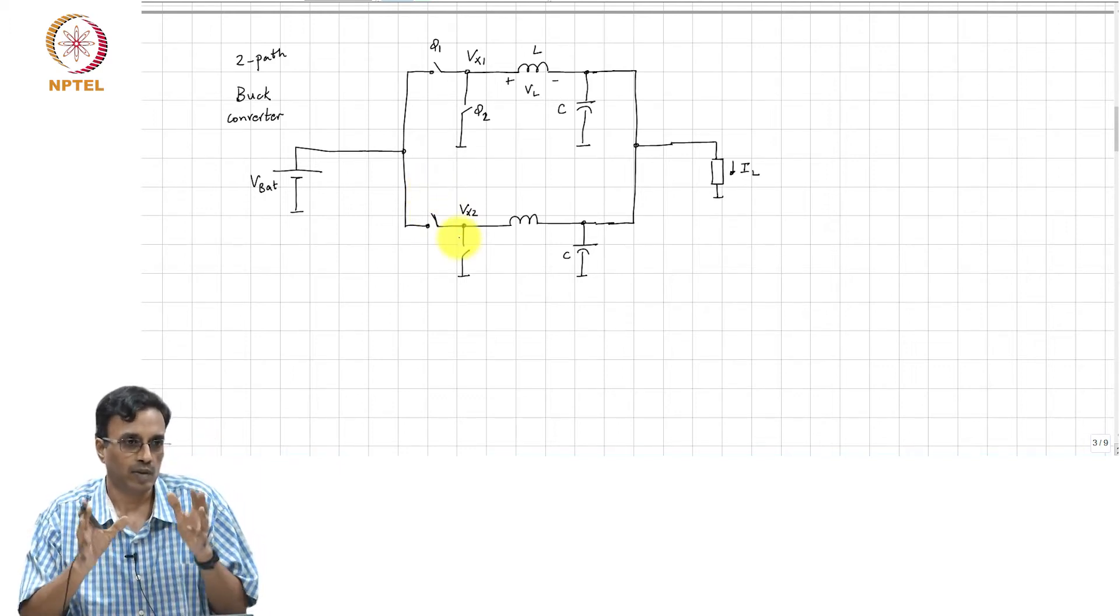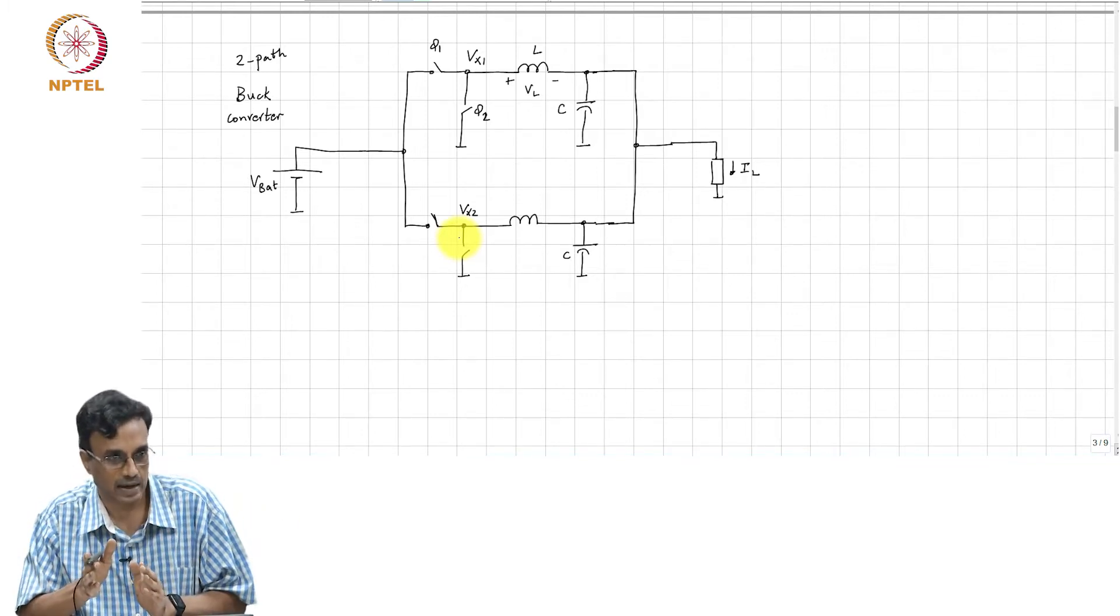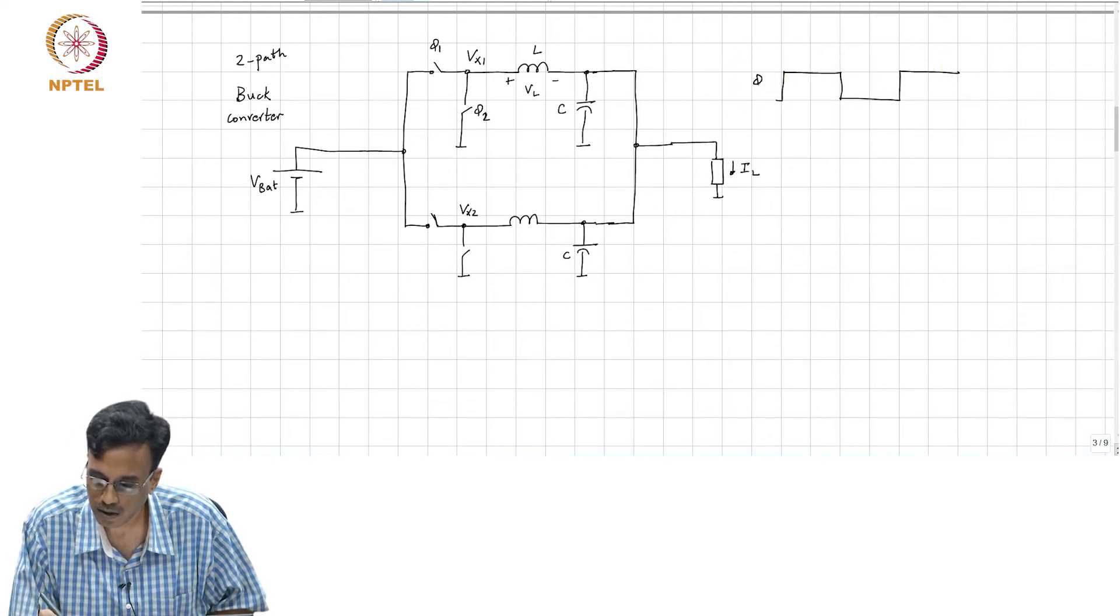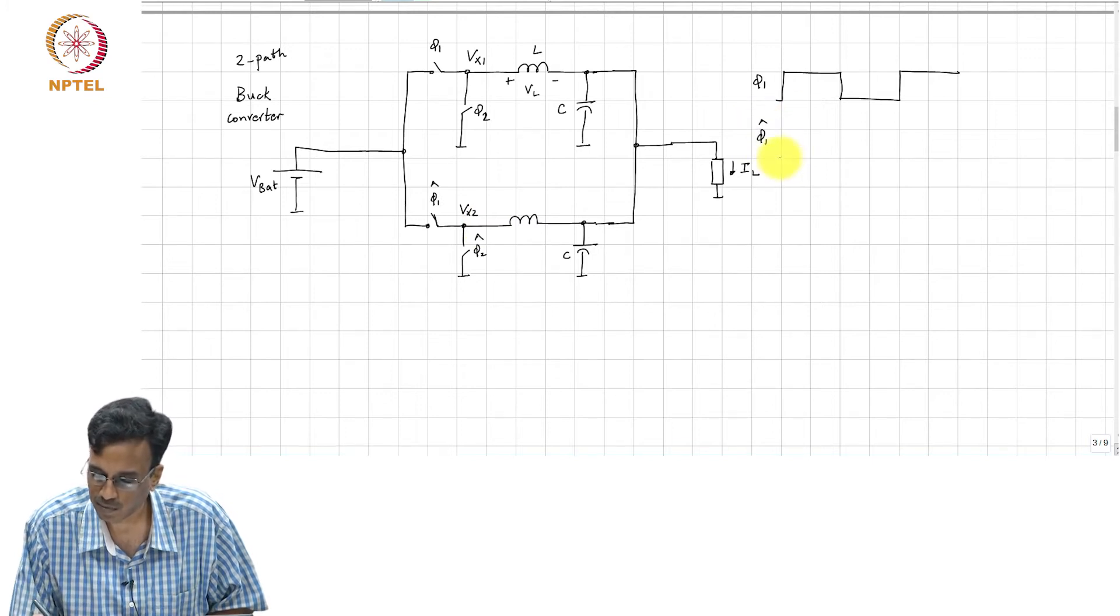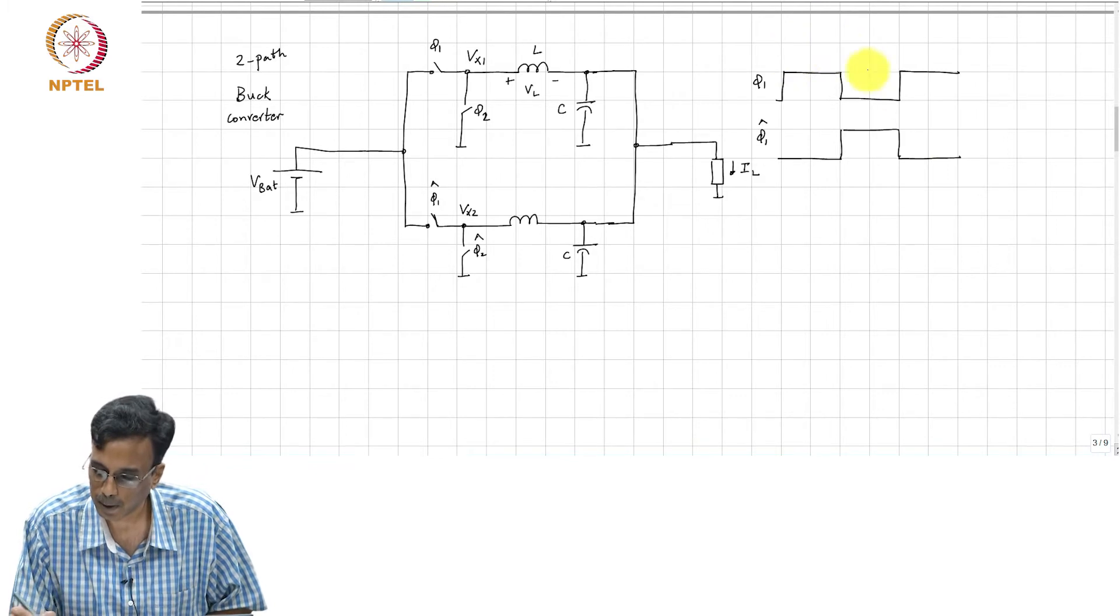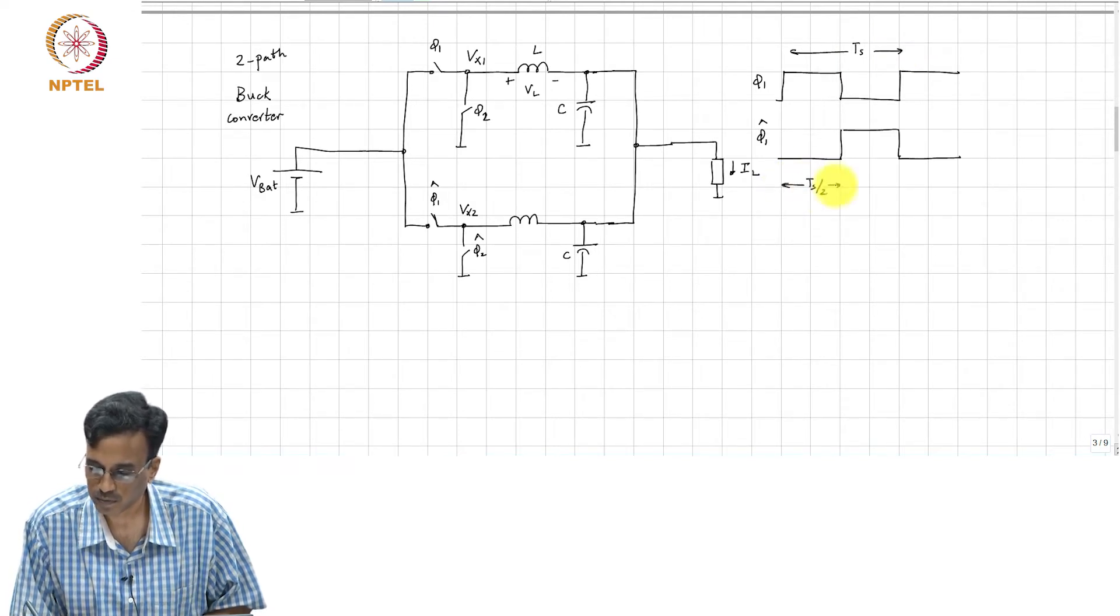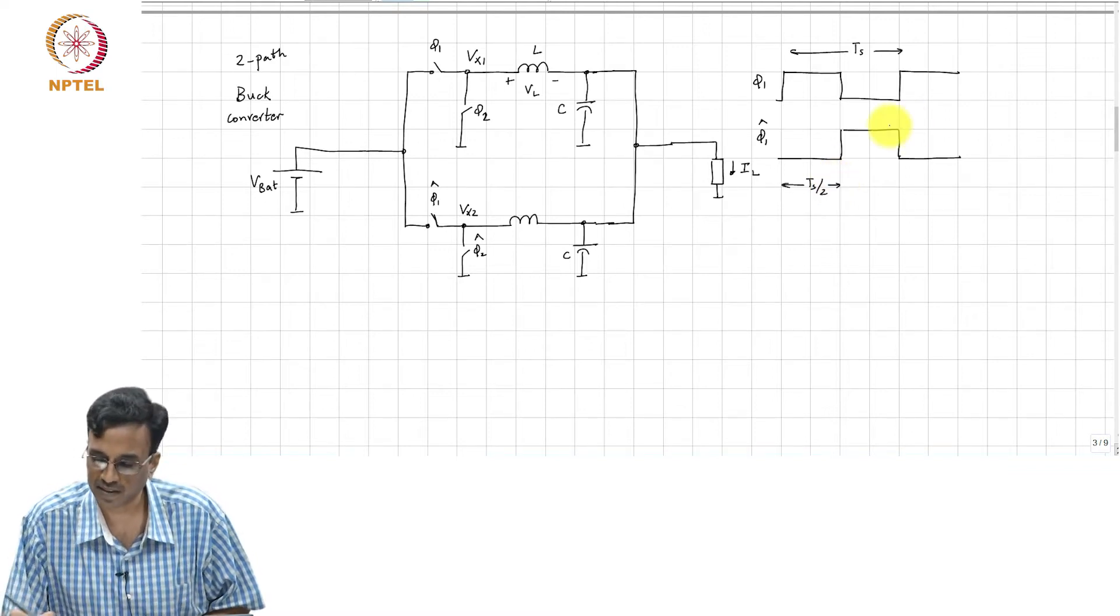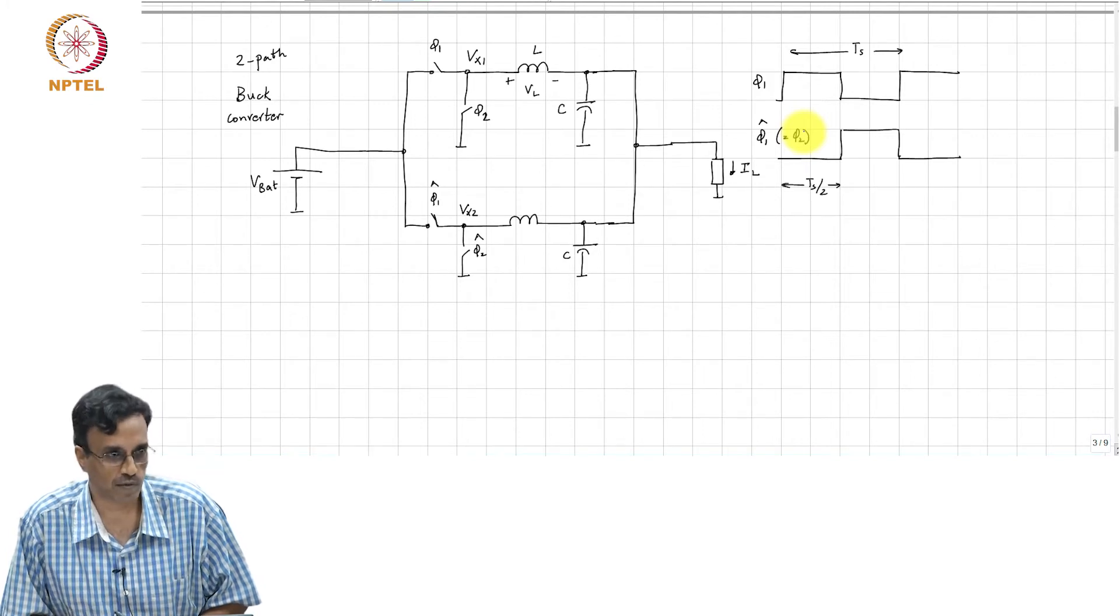Remember what we said about the N-path principle. The network is driven where the variation of time is just shifted in time by Ts over N, in this case Ts over 2. We had phi1 like this. If we call this phi1 hat, this phi2 hat, phi1 hat is simply delayed by Ts/2. This is Ts and this is Ts over 2. Similarly for phi2, because we have chosen 50 percent duty cycle here, phi1 hat simply happens to be equal to phi2, only in this particular case, not if the duty cycle was not 50 percent.